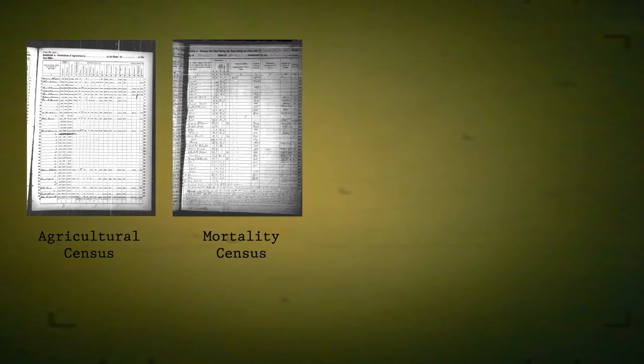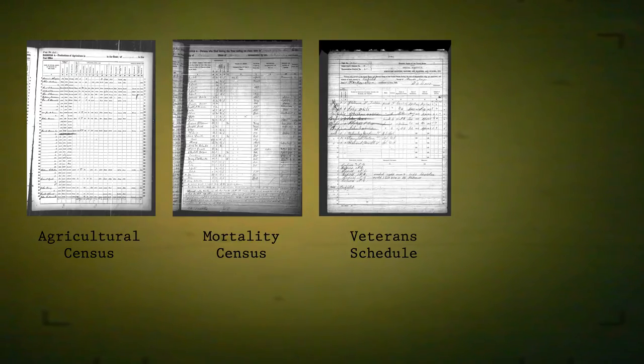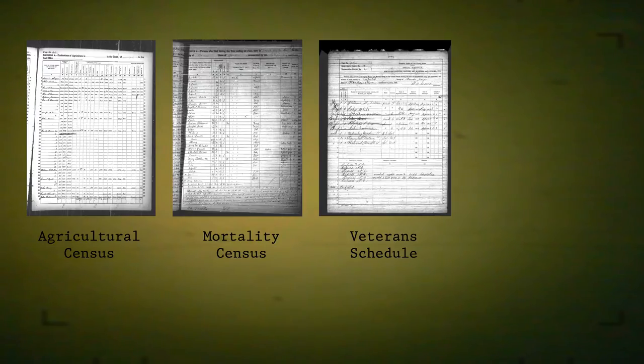Did the Census Bureau only keep statistics on population? Absolutely not. As the census progressed, people saw the value of the information they were gathering, so there were some years where they started to conduct special censuses: the agricultural census, the mortality census, the veteran schedules, and the slave schedules. Those are all very important censuses, and that's not even a complete list of them.